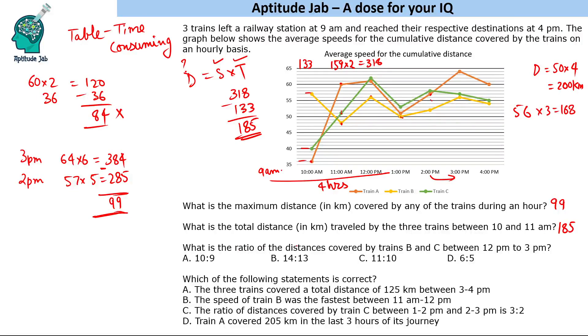Third question: what is the ratio of the distance covered by trains B and C between 12 PM to 3 PM? Train B is the yellow one. If you see it is at 56 and here also it is at 56, so the distance for B is 56 into 3, which is 168 kilometers. From this you can eliminate option A because 168 is not a multiple of 10. You can also eliminate option C.